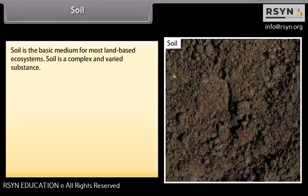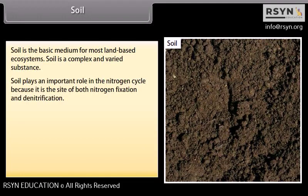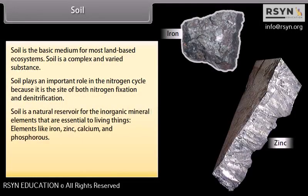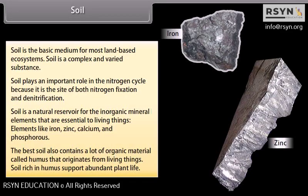Soil is the basic medium for most land-based ecosystems. It plays an important role in the nitrogen cycle as the site of both nitrogen fixation and denitrification. Soil is a natural reservoir for inorganic mineral elements essential to living things, such as iron, zinc, calcium, and phosphorus. The best soil also contains organic material called humus that originates from living things, and soil rich in humus supports abundant plant life.